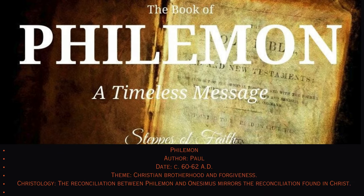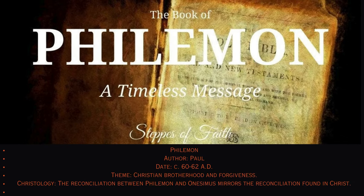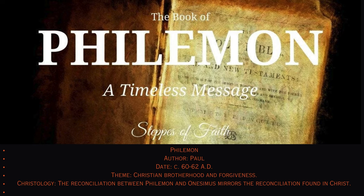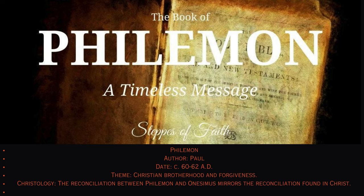57. Philemon. Author: Paul, circa 60–62 AD. Theme: Christian brotherhood and forgiveness. Christology: The reconciliation between Philemon and Onesimus mirrors the reconciliation found in Christ.